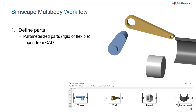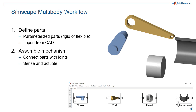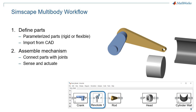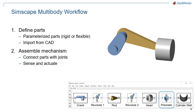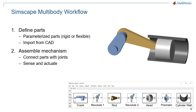Once you have your parts, you need to assemble your mechanism. You look at how the parts move with respect to one another, select the appropriate joint from the library in Simscape Multibody, and connect your parts together. You can also sense and actuate these joints to drive your mechanism.